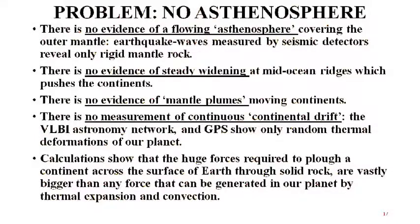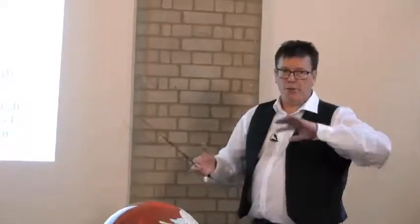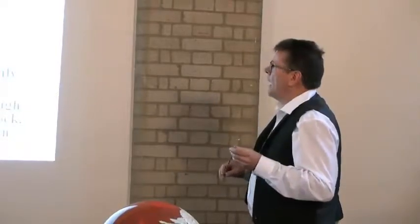Looking at the actual evidence: the continents are supposed to float on the asthenosphere, which is supposed to be fluid or semi-fluid. But when you look at seismic data, there's no fluid layer — it's all solid. There is actually no evidence of steady widening of oceans. We have lots of electronic equipment now — very long baseline arrays, GPS, lots of measuring systems — and you cannot detect consistent movement of continents. You can find lots of wobbles and changes of shape, but not this continuous drift we think should be happening. There is some evidence that mantle plumes occur, but no evidence that they are driving continents to move.